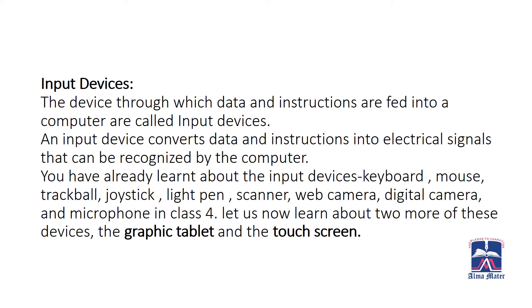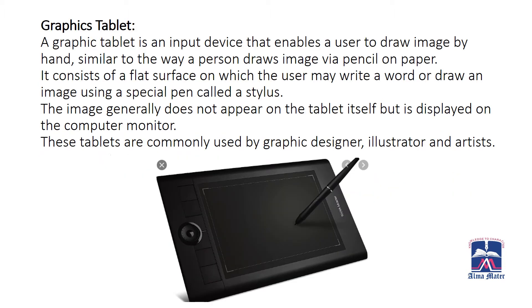Let us now learn about two more of these devices: the graphic tablet and the touchscreen. Number one, we have graphic tablets. A graphic tablet is an input device that enables the user to draw images by hand, similar to the way a person draws via pencil on paper. It consists of a flat surface on which the user may write a word or draw an image using a special pen called a stylus. You can see this in the image below.